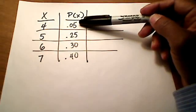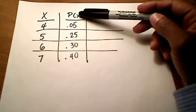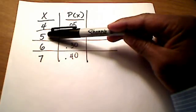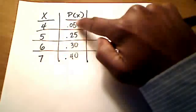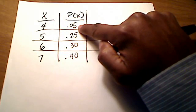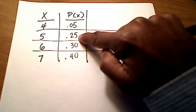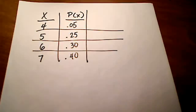These are the probabilities — the P(x). This is the probability that we attain each of these random variables. So the probability that we get a 4 is 5%, or 0.05. The probability that we get a 5 is 25%, or 0.25, et cetera.